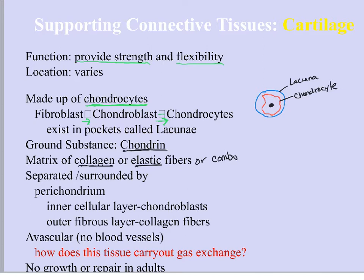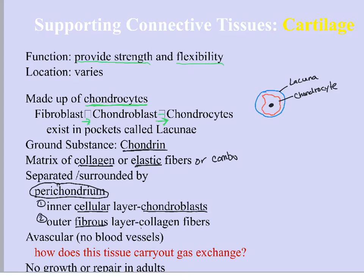One of the things we see with cartilage is that it is surrounded by a connective tissue structure — completely encapsulated by a structure we call perichondrium. That perichondrium has two layers: an inner cellular layer and an outer fibrous layer. The inner cellular layer is where you'll find chondroblasts, the cells that are still secreting ground substance and fibers. In the outer fibrous layer you find collagen fibers.